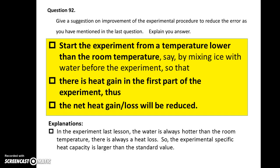Question 92. Give a suggestion then. We may start the experiment from a temperature lower than the room temperature. You may mix ice with water before the experiment. So there is heat gain in the first part of the experiment and there will be heat loss in the second part. So the net heat gain or loss will be reduced, and so the result will be more accurate.